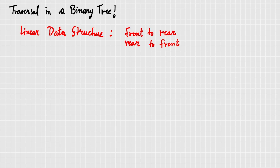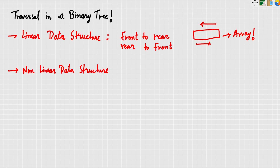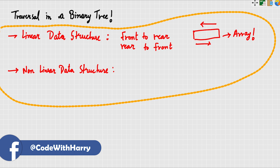It is very simple. If you traverse an array, you can traverse it from front to back or from back to front. So this is how linear data structure traversal works. If I am talking about non-linear data structure, it can be done in different ways depending on the type of data structure.